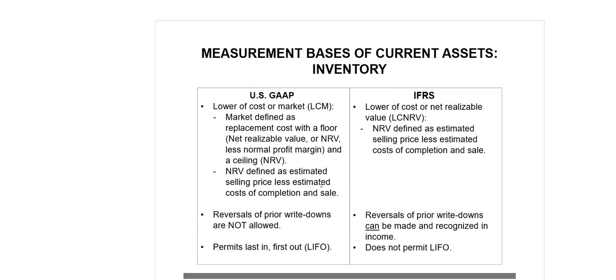Inventory sold is reported as cost of goods sold in the income statement as an expense. Accounting standards allow the use of different valuation methods for determining cost of goods sold and the amounts reported as inventory on the balance sheet — referred to as cost formulas under IFRS and cost flow assumptions under US GAAP. IFRS allows only the FIFO method, the weighted average cost method and the specific identification method. However, US GAAP also allows the use of the LIFO method, which is not permitted under IFRS.